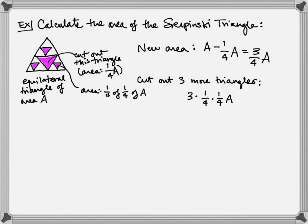The area of each one of these little purple triangles is one-fourth of one-fourth of the total area A, because each of those little white triangles that I started with is area one-fourth of A, and then I cut out the middle of that.